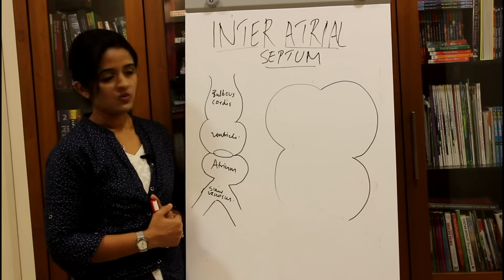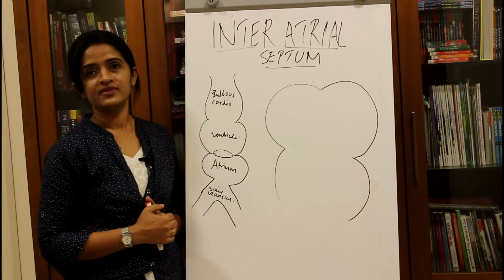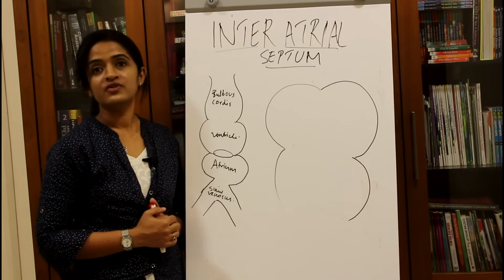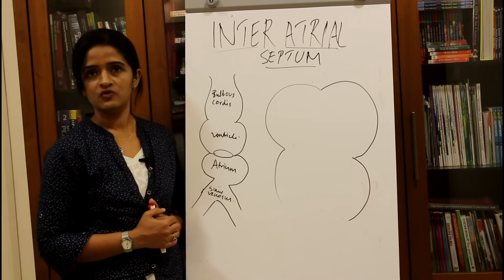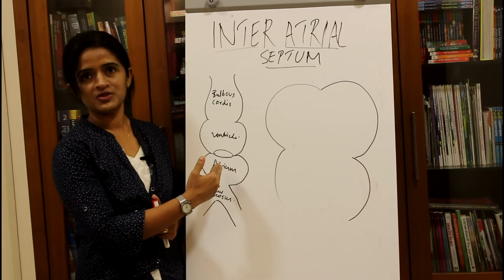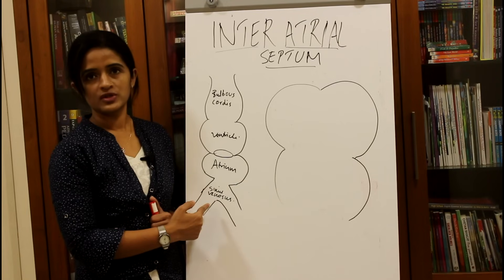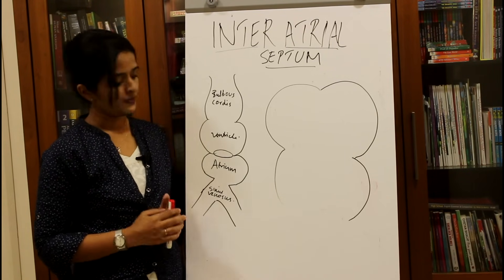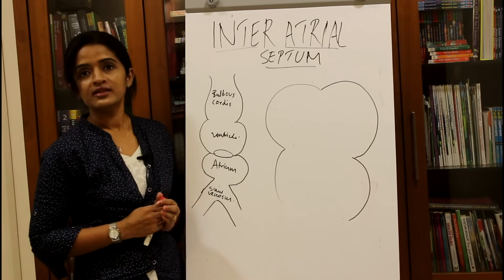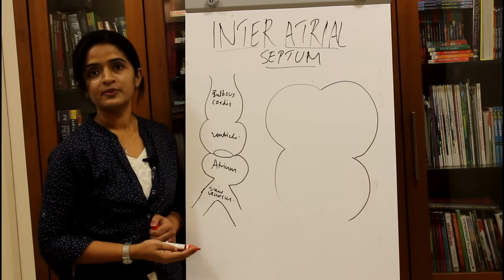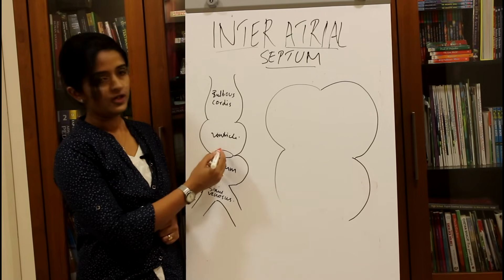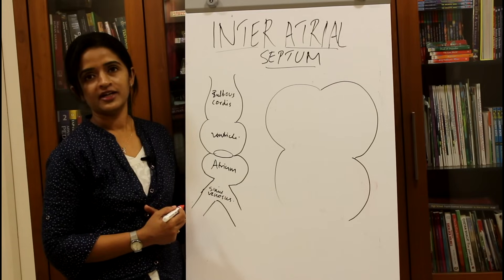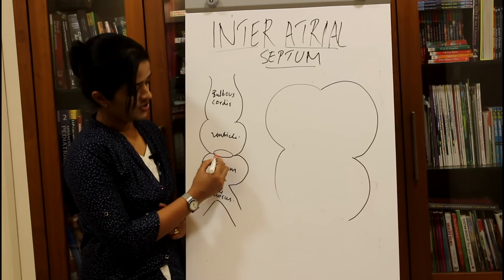At one end of the heart tube we have the arterial end, called the bulbus cordis, and at the other end we have the venous end, called the sinus venosus. In between, you have the ventricle and atrium. The atrium lies closer to the venous end and the ventricle lies closer to the arterial end. There is a canal between the primitive atrium and primitive ventricle called the atrioventricular canal.